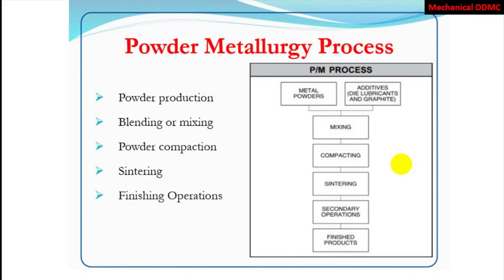The powder metallurgy process starts from powder production, then blending or mixing, powder compaction, sintering, and finishing operations. Like other metallurgy processes, powder metallurgy also contains defined steps. The first one is powder production — it is nothing but the formation of powder from an ore component or ore metal.